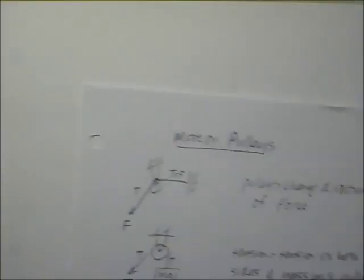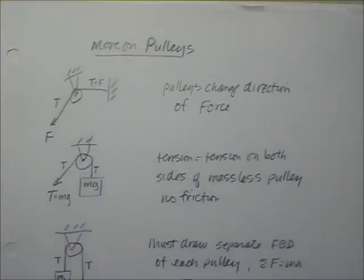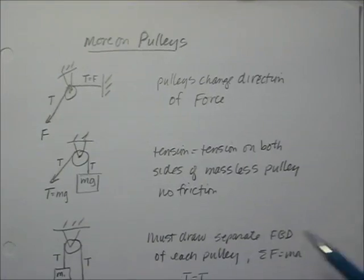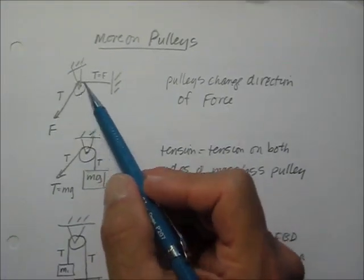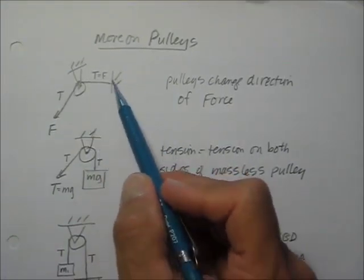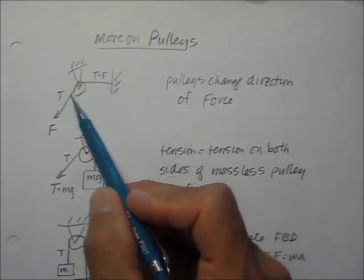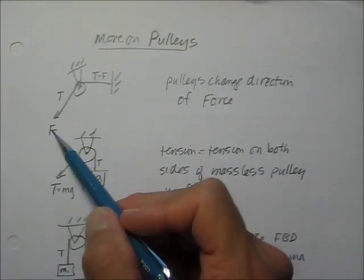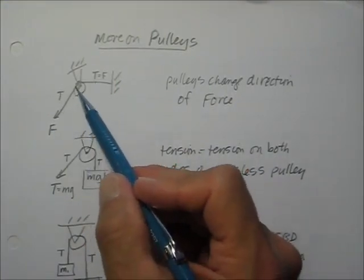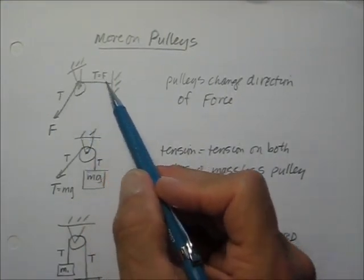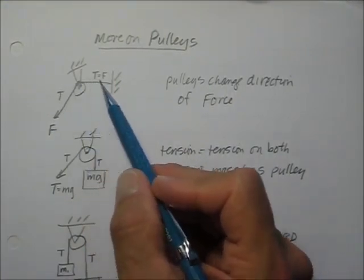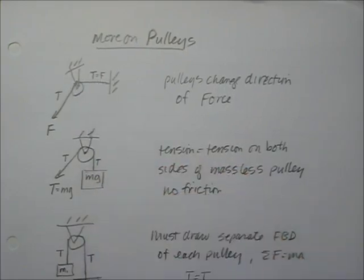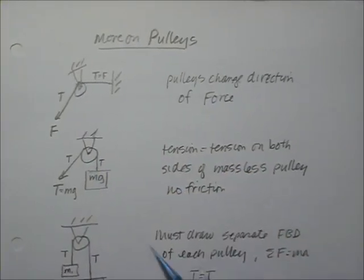A couple words on pulleys. Pulleys only change the direction of a force. For example, if you have a pulley and the rope is tied to the wall, and you're pulling here with a tension, the tension is going to be the same throughout the pulley. All the pulley does is change the direction, and we should know that from statics.